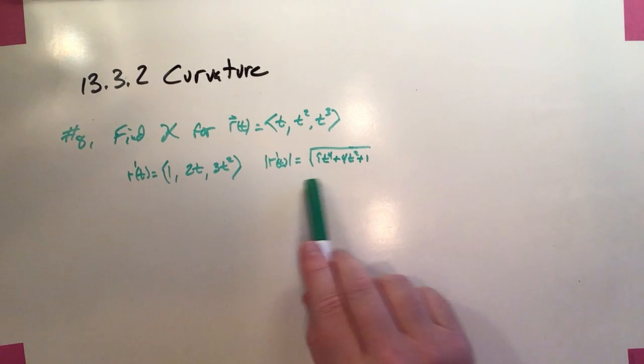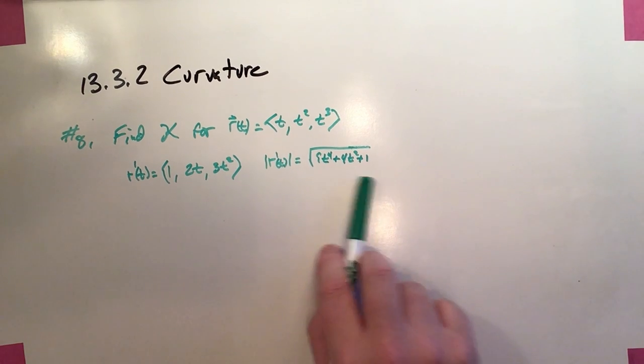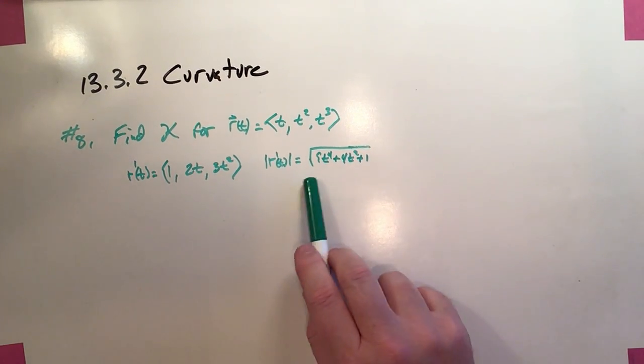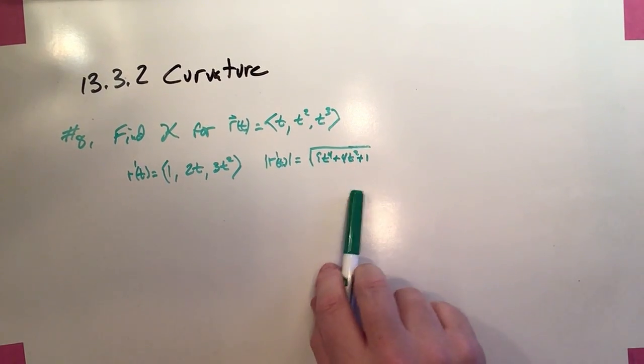And again, as a trinomial under the square root, this is going to be a real nightmare as an integrand. We just don't have anything outside to use for u-sub purposes, and that means I'm going to abandon this reparametrization.